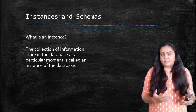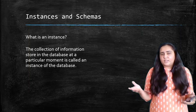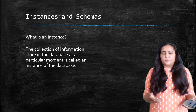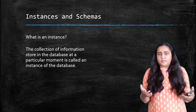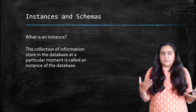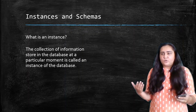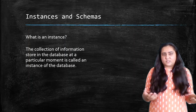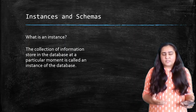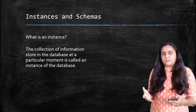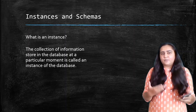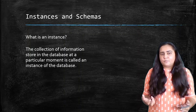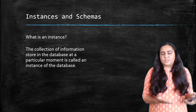An instance doesn't mean it will remain that way forever, because the database is dynamic and keeps changing. For example, a sales table might show a particular part with a quantity of 200 right now, but after three hours it could be 500. When you take a picture of the database at a particular time, that still picture is known as an instance of the database.